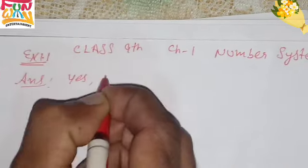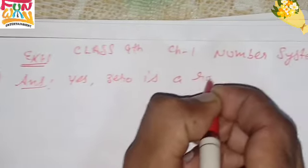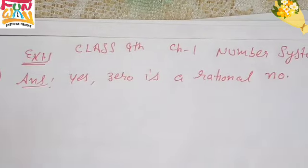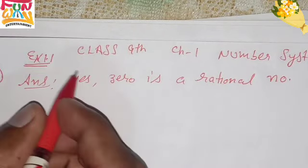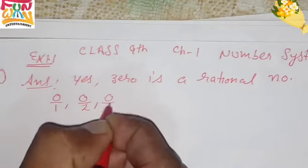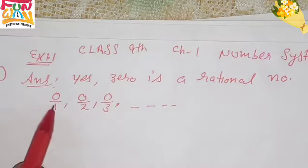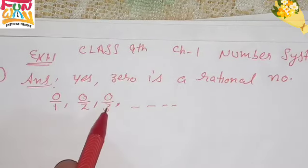Answer: Yes, 0 is a rational number because we can write 0 as 0 over 1, 0 over 2, 0 over 3, and so on. We can write it in the form 0 over 1 or 2 or 3 or anything else.